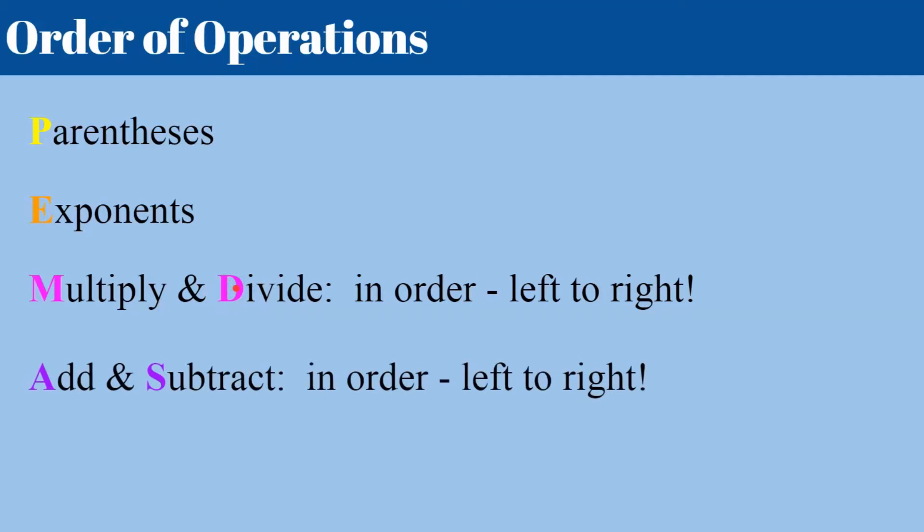And lastly, you do the A, S in PEMDAS, the add and subtract. And again, they are done together, but in order from left to right. So starting at the left side of your expression that remains after doing the P, the E, the M and the D, then look and you do all the addition and subtraction in order from left to right. If you don't do these in order, you could get the wrong answer.